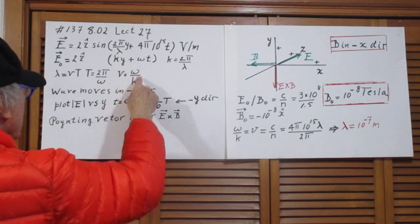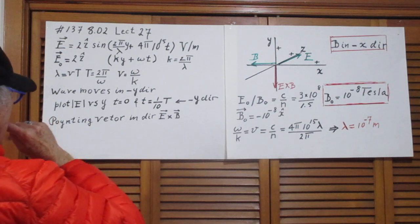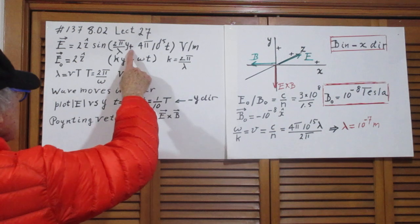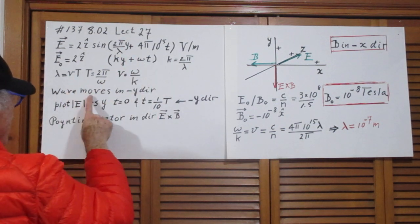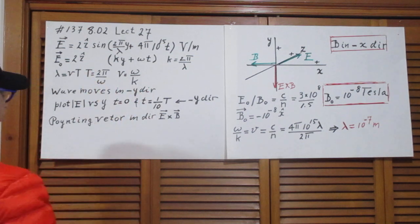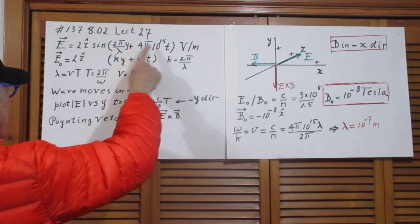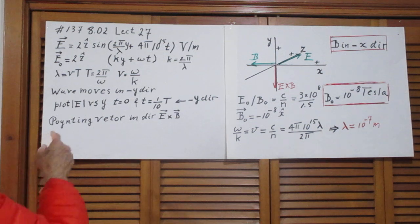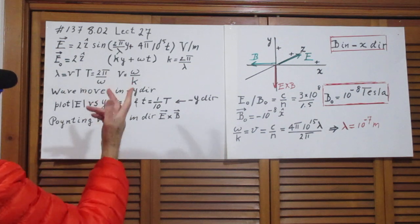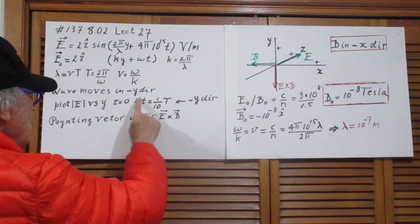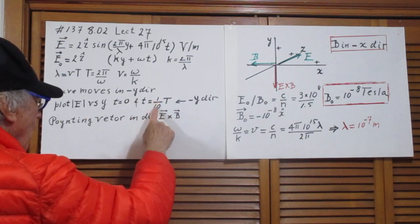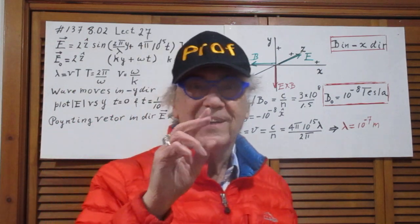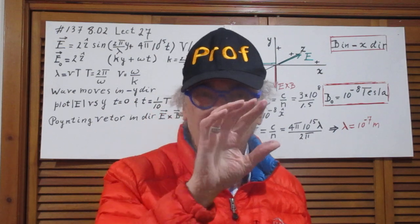You can immediately tell the speed of the electromagnetic wave: it is omega divided by k. Because there is a plus sign in the argument, the wave must be moving in the minus y direction. If there had been a minus sign, the wave would be moving in the plus y direction. You can verify this by plotting the E vector magnitude versus y at t=0, then incrementing t slightly, and observing the wave has shifted in the minus y direction.